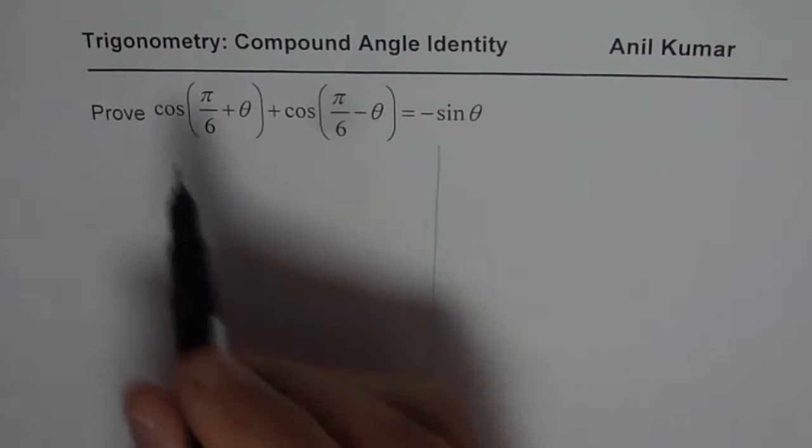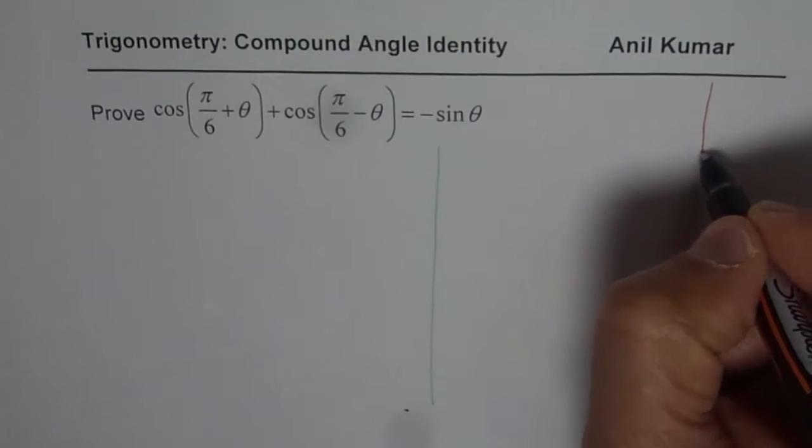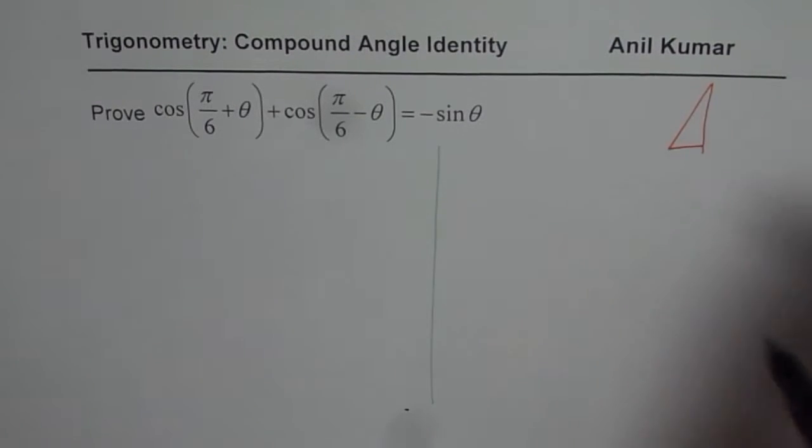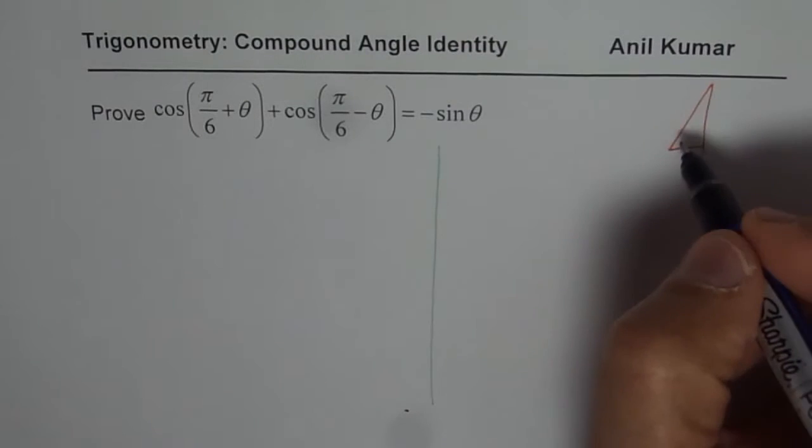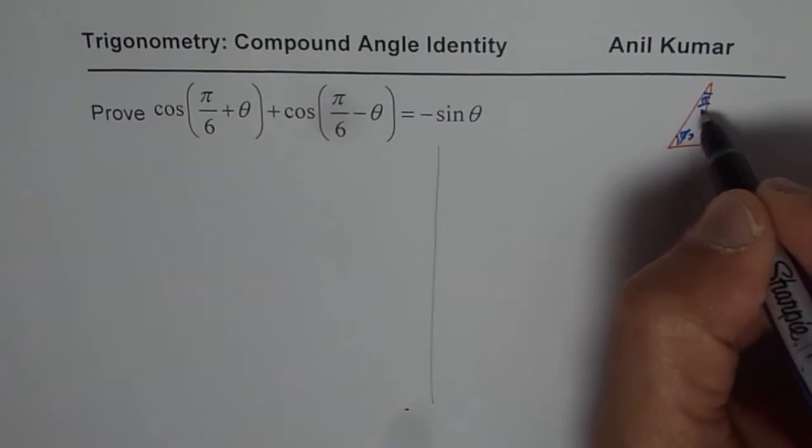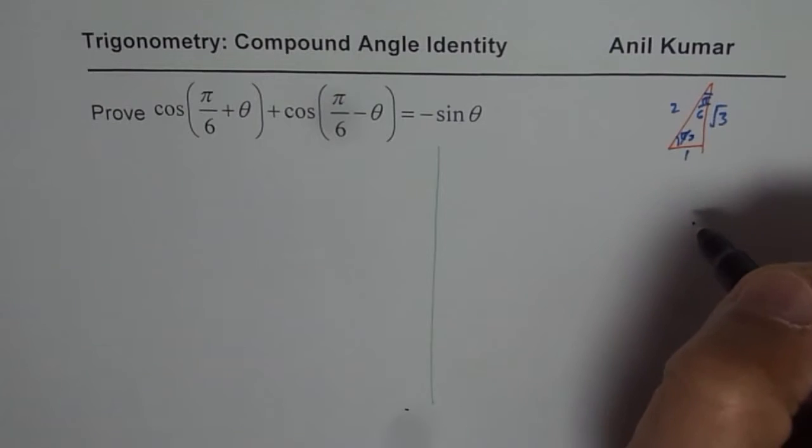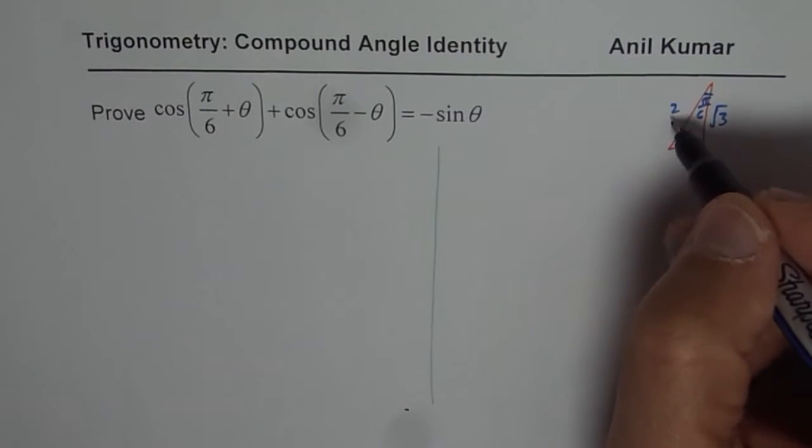We know what cos of pi by 6 or sine of pi by 6 is. Let me make the special triangle here. The pi by 6 triangle has angles pi by 3 and pi by 6, with sides 1, 2, and square root of 3. From the pi by 6 angle, cos is square root of 3 over 2 and sine is 1 over 2.